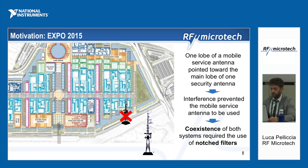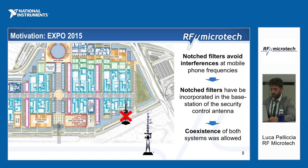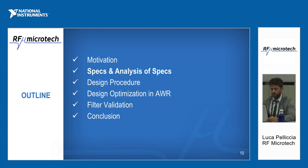It was necessary to find a way to allow the coexistence of both systems. The idea was to develop notched filters. It is well known that notched filters avoid interference at mobile phone frequencies — in particular, they can avoid transmission or receiving at some frequencies. Notched filters were incorporated in the base station of the security control antenna, allowing coexistence of both systems.